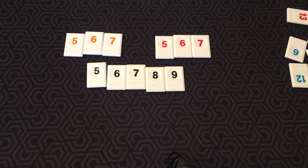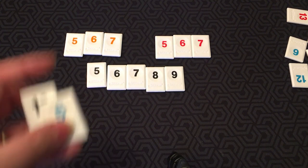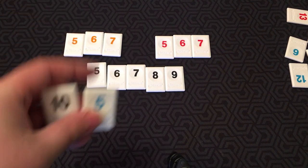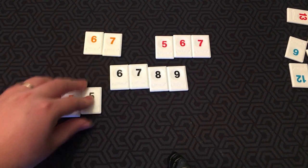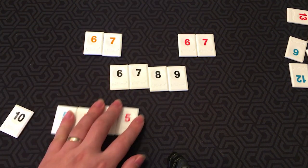And finally, you can do multiple splits. So let's say I had a blue 5 and a black 10 in my hand, and these were on the table. What I could do is I could take a 5 from each of these sets and make a group.